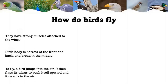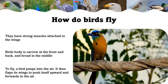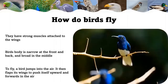How do birds fly? Birds are the only animals with feathers on their body. They have wings instead of arms, and most of them can use their wings to fly. They have strong muscles attached to the wings, and they use these muscles to flap their wings. Birds are light because their bones are thin and hollow, which helps them to fly easily.